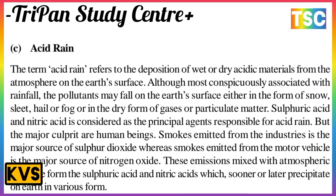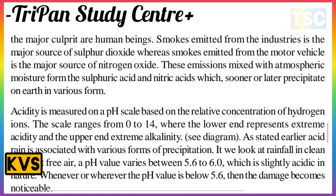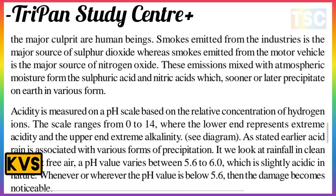But the major culprits are human beings. Smoke emitted from industries is a major source of sulfur dioxide, while smoke emitted from motor vehicles is a major source of nitrogen oxides. These emissions mix with atmospheric moisture to form sulfuric acid and nitric acid, which then precipitate on the Earth in various forms.